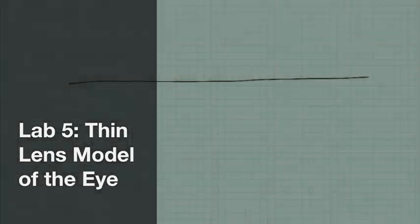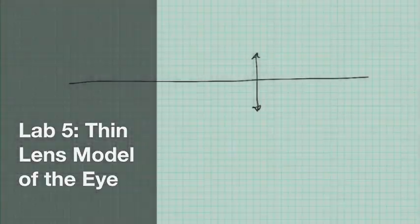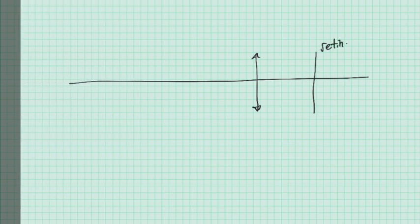Welcome to lab 5 on the thin lens model of the eye. The thin lens model of the eye is a single thin lens and one screen for the retina.